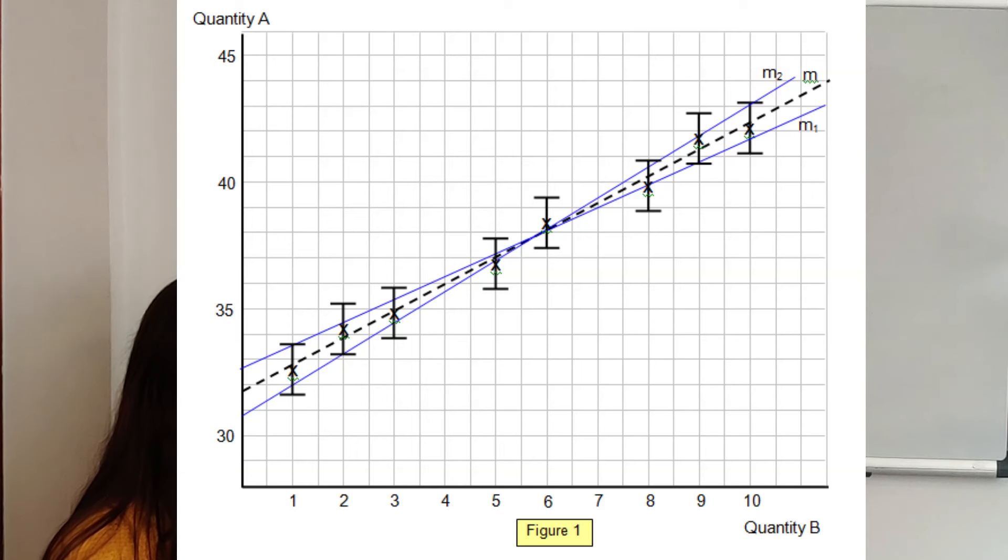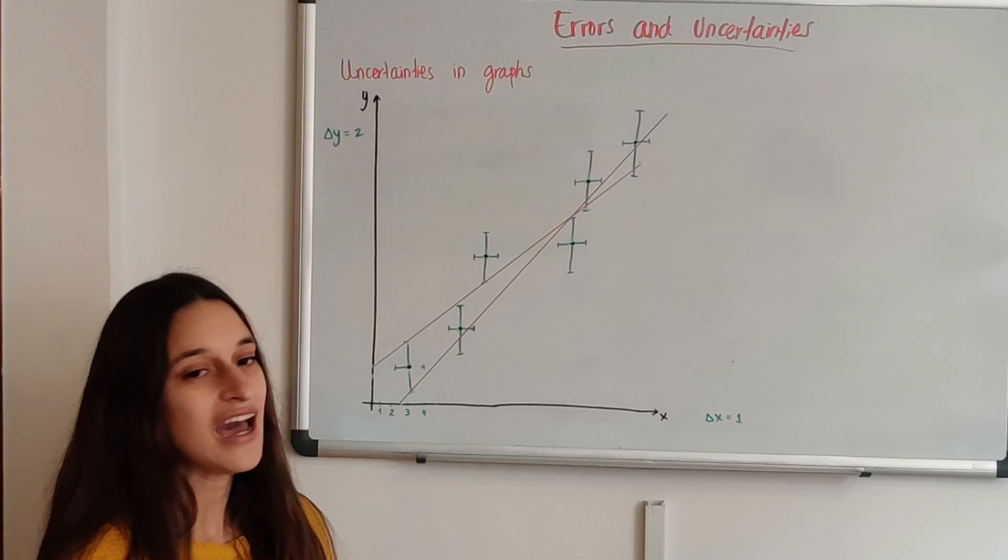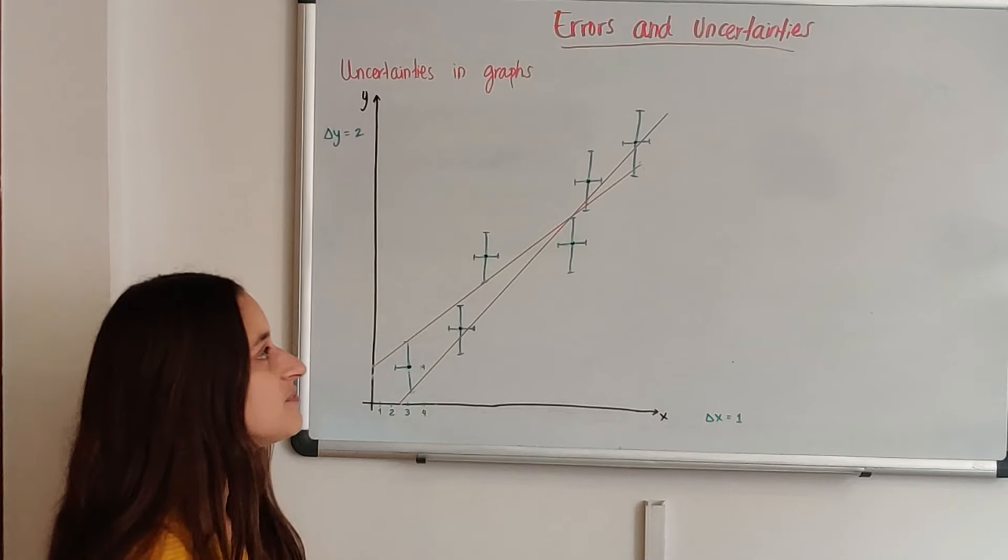That you can make a big line, a big slope of a line, and then a small slope with the same point, within the same points, and it should work.